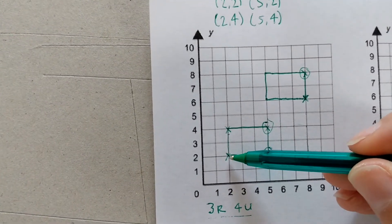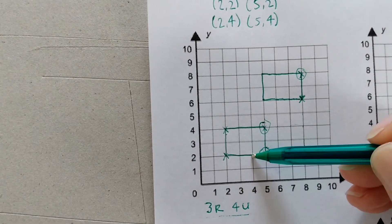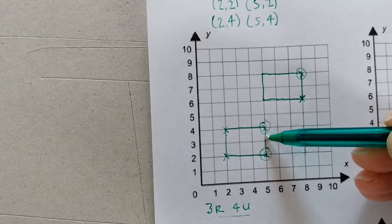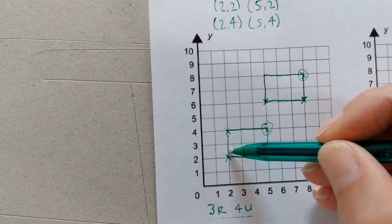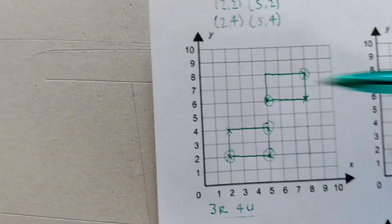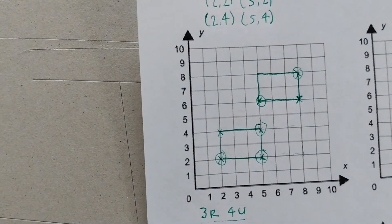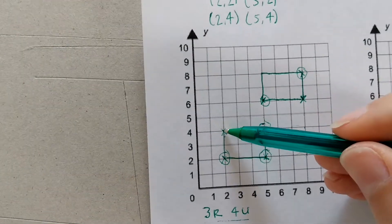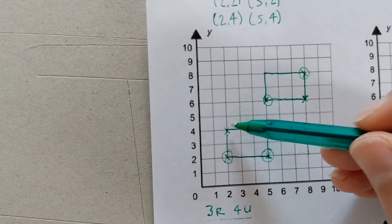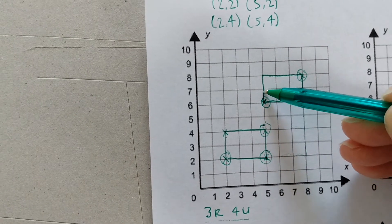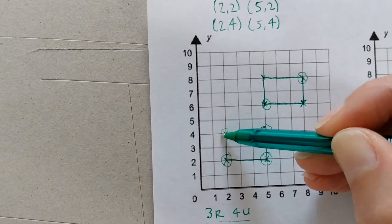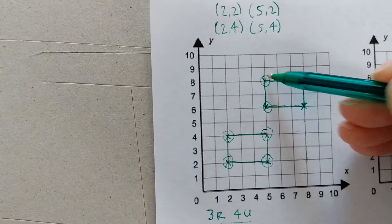Let's test this one. 3 right and 4 up. 1, 2, 3. 1, 2, 3, 4. Brilliant. He started there and he ended up there. I'm going to test the last one. Just check it. Does it also move 3 right and 4 up? 1, 2, 3. 1, 2, 3, 4. Yes, it does. He went from here to here.